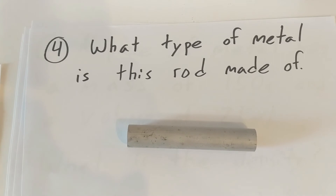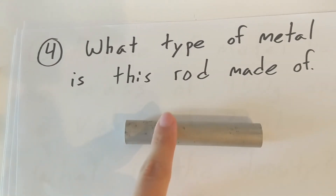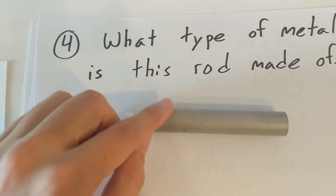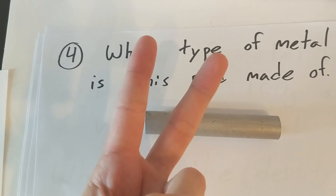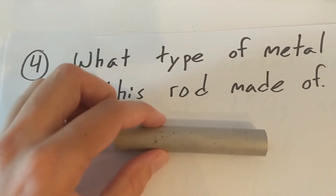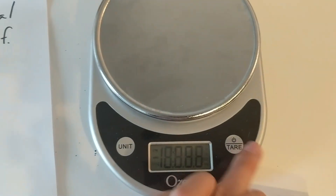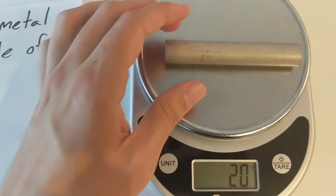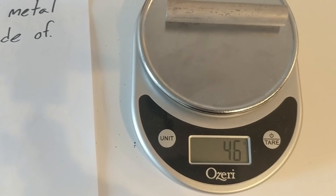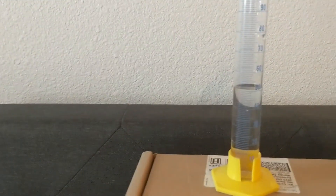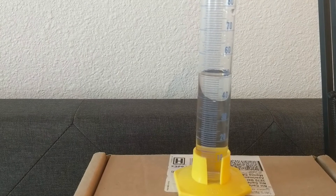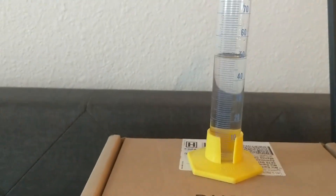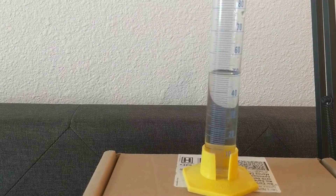Practice problem number four: what type of metal is this rod made of? We identify the metal by finding its density, and to do that we need mass and volume. Starting with mass — moving to the scale — I've weighed this multiple times and we get 46 grams. To find the volume, we use a graduated cylinder. I've put in about 50 milliliters of water.